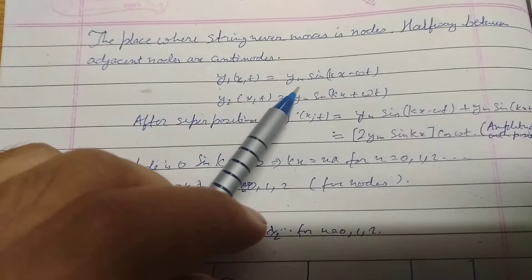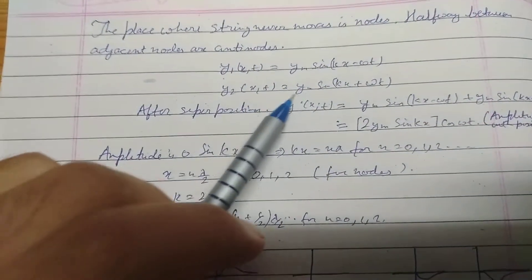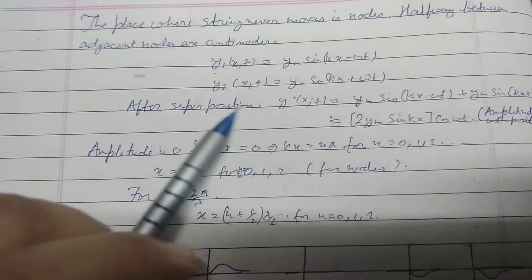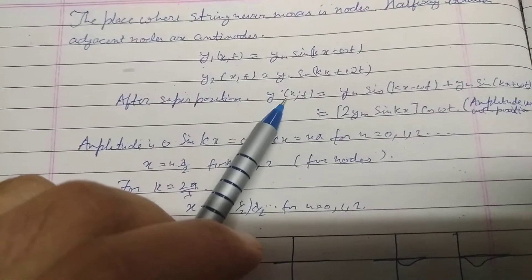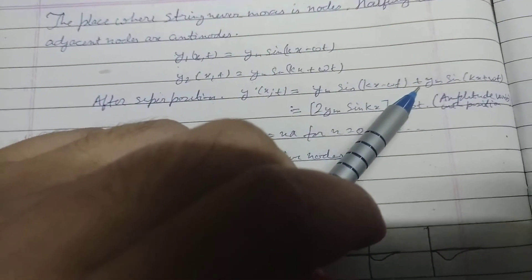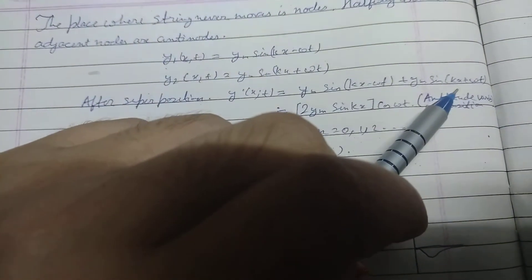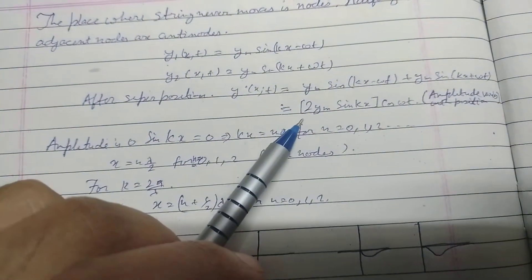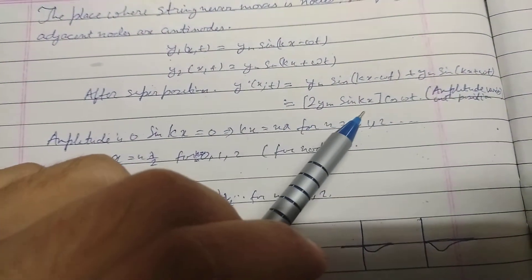y1(x,t) equals ym sin(kx minus omega t), y2(x,t) equals ym sin(kx plus omega t). After superposition, y'(x,t) equals ym sin(kx minus omega t) plus ym sin(kx plus omega t), which equals 2ym sin(kx) cos(omega t).